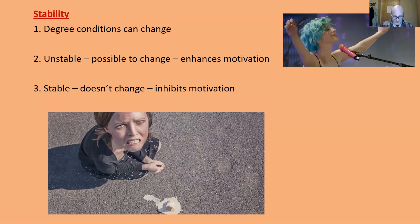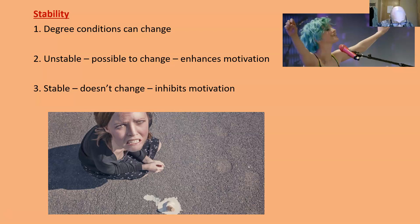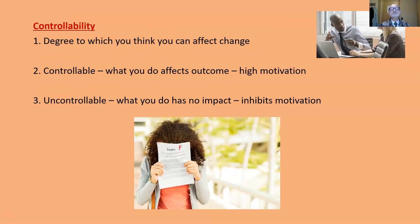Stability refers to the degree to which conditions can change. An unstable attribute means it is possible to change the outcome — this enhances motivation. A stable attribute is when you believe the outcome is fixed no matter what you do; you think there's nothing you can do to change it — 'I will always win,' 'I will always fail,' 'this will always happen.' This inhibits motivation.